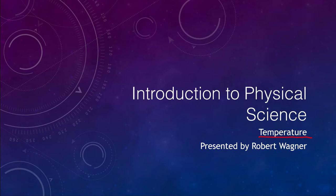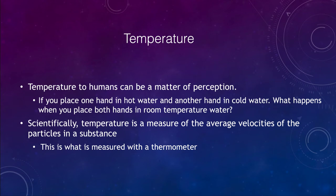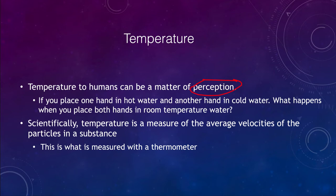We're going to take a look at this in terms of the physical definition of temperature as we begin our unit on heat. Temperature is really a matter of perception — what is hot and what is cold can depend on your perception. For example, put one hand in hot water and another in cold water, then place both into room temperature water. The hand from hot water will feel cold, and the hand from cold water will feel warm. So temperature can be a matter of perception.